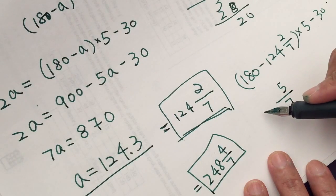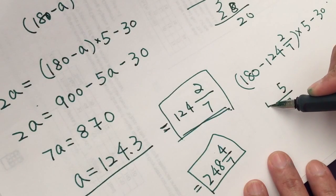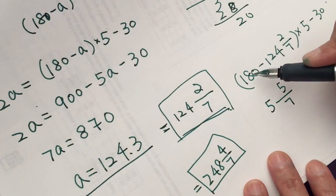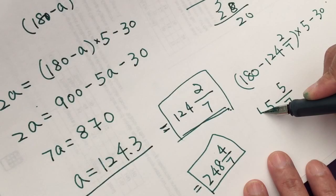So 180 minus 125, 8 minus 2, this becomes 7 minus 2, 7 minus 2 equals 5.